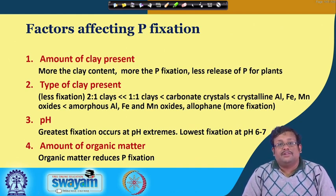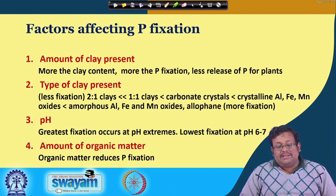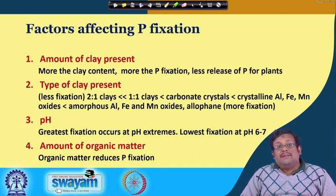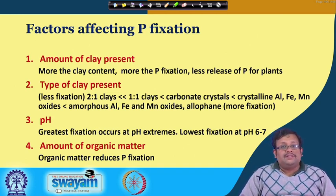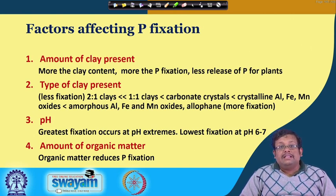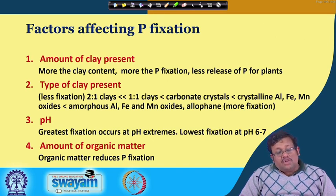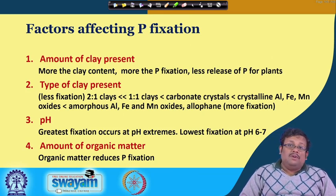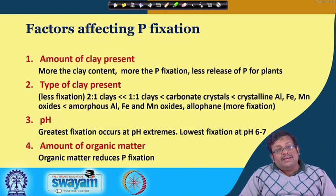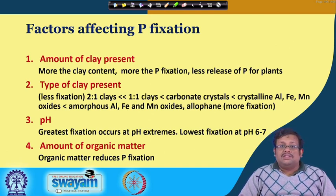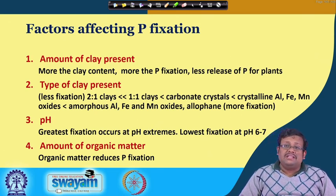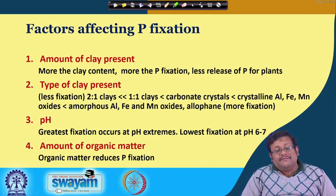Factors affecting phosphate fixation: the amount of clay present — more clay means more phosphate fixation and less release to the plant. The type of clay: the most phosphorus fixation occurs with amorphous iron, aluminum, and manganese oxides and clay minerals like allophane; the least fixation occurs in 2:1 type clays. pH is also very important — greatest fixation occurs at pH extremes and lower fixation occurs at pH 6 to 7. Organic matter reduces phosphorus fixation because organic acids released during decomposition can replace fixed phosphates from iron, aluminum, and calcium phosphates.